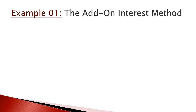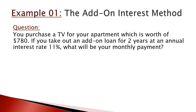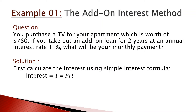Let's start with one example. You are purchasing a TV for your apartment worth $780. You take out an add-on loan for 2 years at a rate of 11%. To find the monthly payment, we first calculate the interest using the simple interest formula: I = PRT, where P is $780, R is 0.11, and T is 2 years. That gives us $171.60.